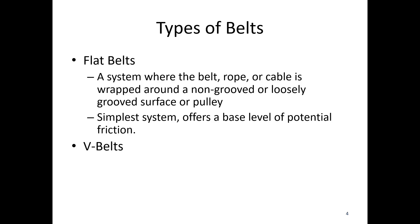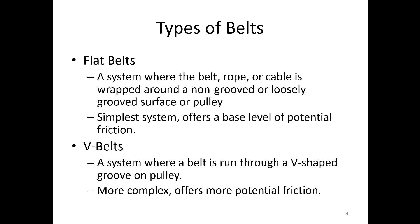The alternative is V-belts. A V-belt is a system where the belt is run through a V-shaped groove on a pulley. It's a little more complex and offers more potential friction. In the case where we're using the friction to drive something, we might use a V-belt to get more power through our system because we can get more friction to transfer that torque.